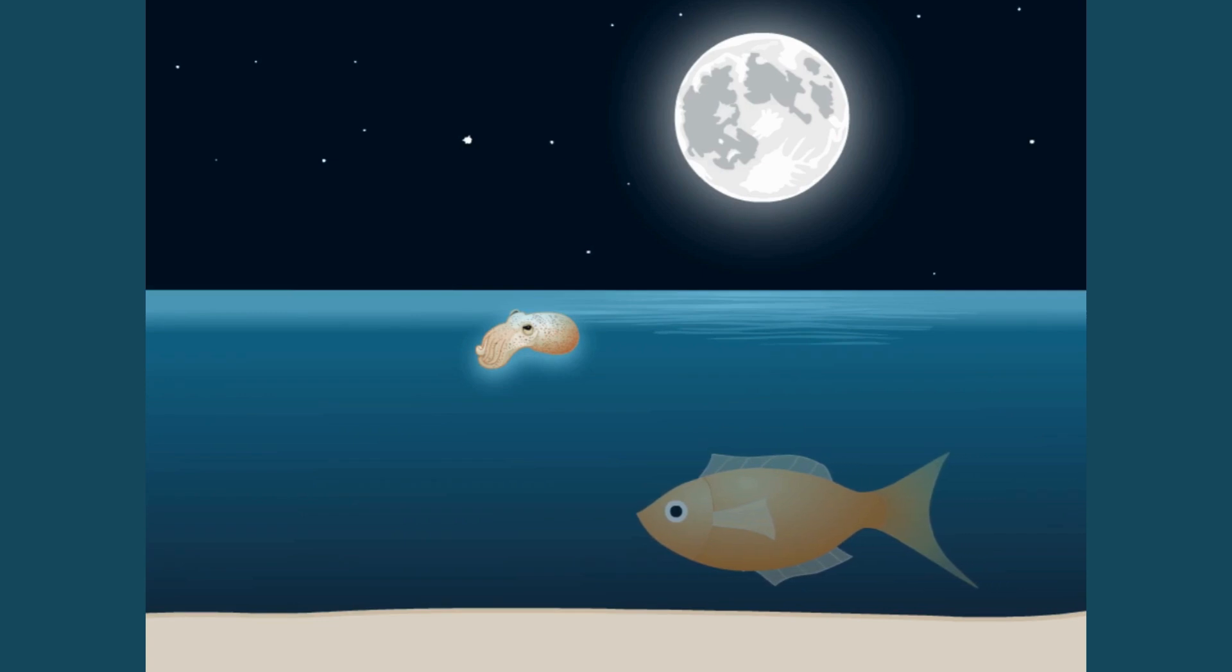As the squid swims on a moonlit night, its light organ projects light downwards in an apparent attempt to camouflage the squid from predators below looking up. As a fish, you would see light matching that of the lit sky instead of a dark squid.